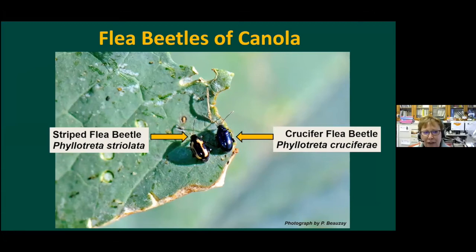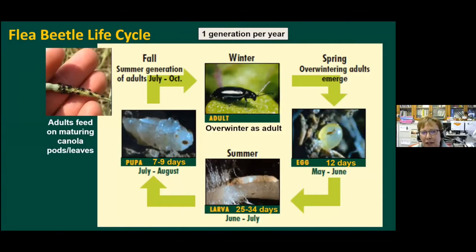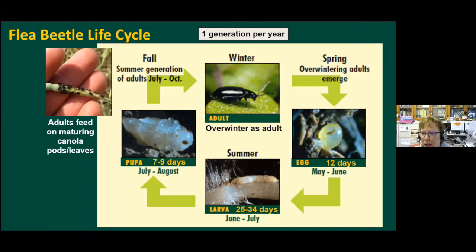There are two species we mainly have in canola: the striped flea beetle and the crucifer flea beetle, and they're easy to identify by the stripes on the striped species. The life cycle is one generation per year. They overwinter as adults in shelter belts and grassy ditches. When temperatures in the spring warm up to about 59°F air temperature, the adult beetle becomes active and will emerge. The females will eventually go to newly planted canola fields and lay eggs in the soil close to the germinating canola plants.